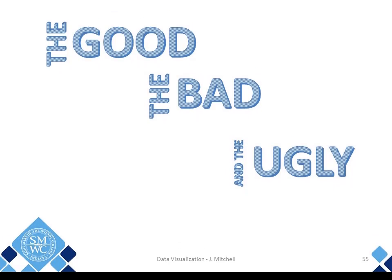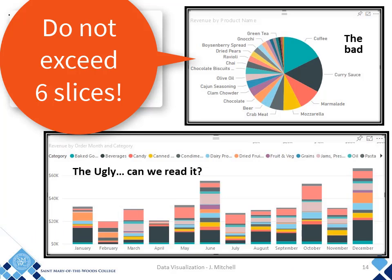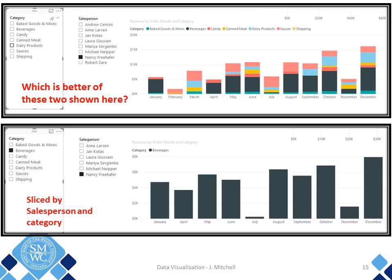But today, I want to focus on the good, the bad, and the ugly visualizations. Why is this pie chart bad here? Could we group the categories so you only have the top five major categories? Because this is too many sections of the pie. The ugly one combines order month and category revenue by order month — all I can see is that black, which represents beverages, is the biggest seller. I would need something like a slicer or a category filter to actually understand what's going on.